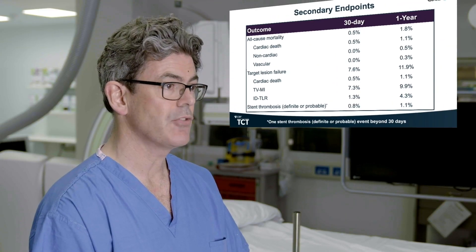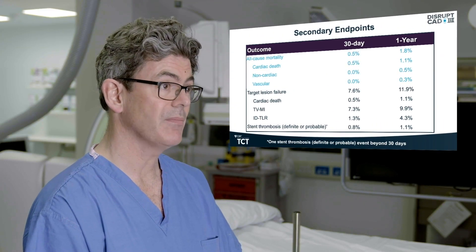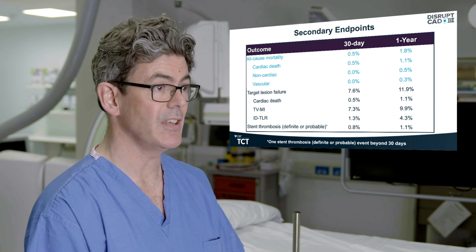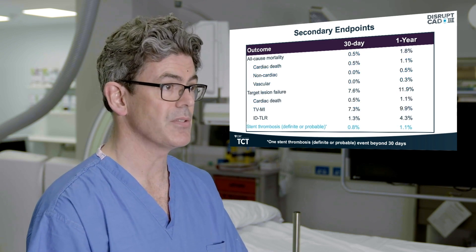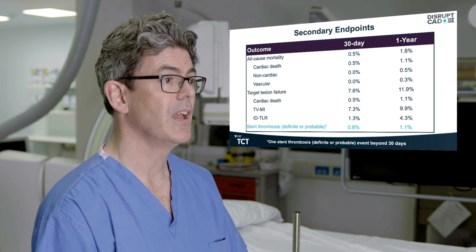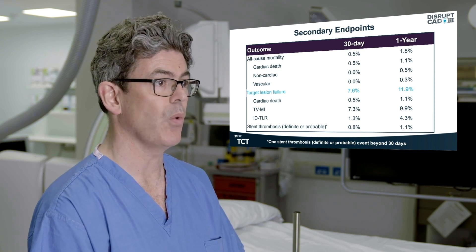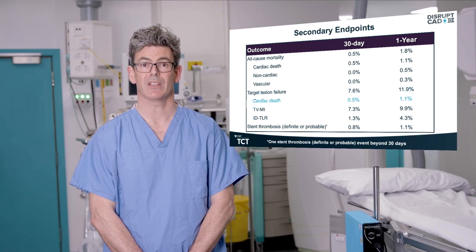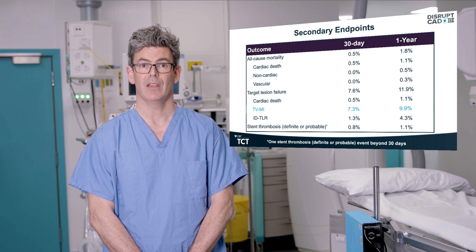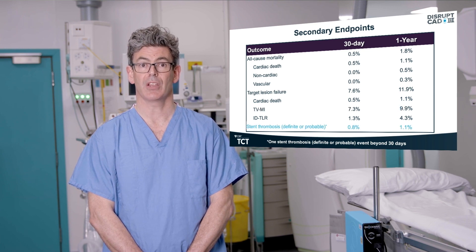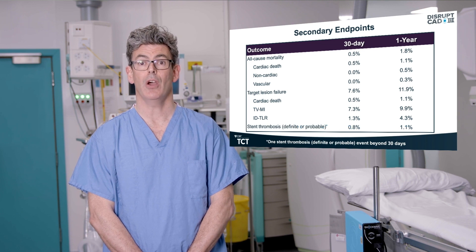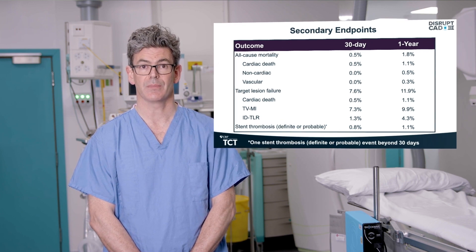Key secondary endpoints included mortality, target lesion failure, and stent thrombosis. Target lesion failure was 11.9% at one year and was driven by the rate of target vessel MI. Definite or probable stent thrombosis occurred in 1.1% of patients, but only one event occurred after 30 days.